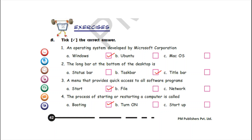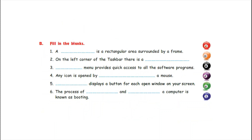Now see the next exercise: fill in the blanks. Number one: a dash is a rectangular area surrounded by a frame — a window. So write here in the fill-up: window. A window is a rectangular area surrounded by a frame.